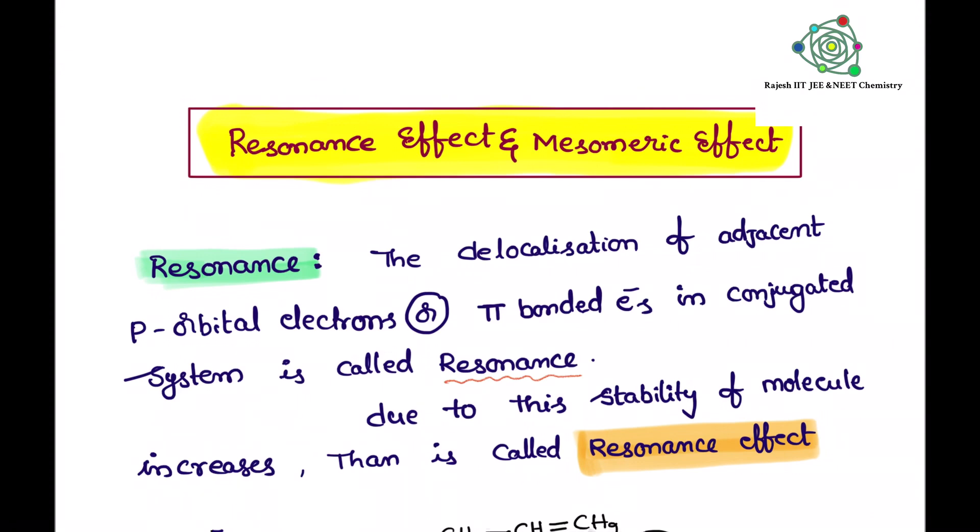First, come to the resonance. What is meant by resonance? Here, delocalization of adjacent p-orbital electrons or pi bonded electrons in conjugated system. The delocalization of pi bonded electrons or p-orbital electrons is called resonance.